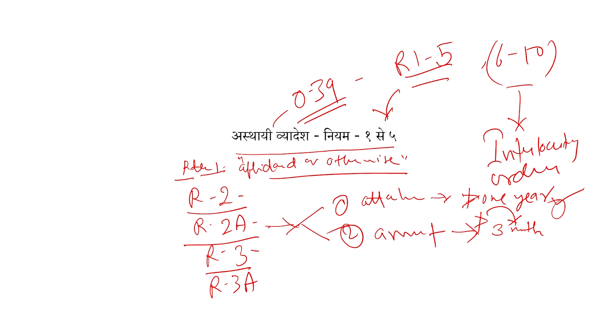Then what do you have to do? You have to dispose the application within 30 days, because you have to do ex-parte. Ex-parte is the way to defeat the objective. So the maximum time — every endeavor must be done by the court of law — that application is to be disposed of within 30 days from the date of submission. So in 30 days you have to dispose of this. This is Rule 3. So if there is ex-parte, within 30 days from the date of application, you have to dispose under Rule 3.